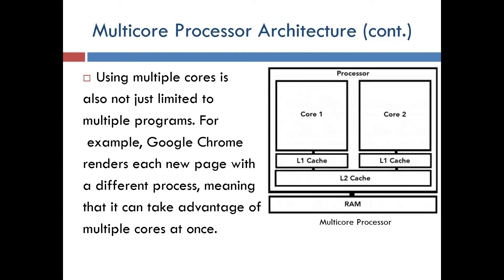Using multiple cores is also not just limited to multiple programs. For example, Google Chrome renders each new page with a different process, meaning that it can take advantage of multiple cores at once.